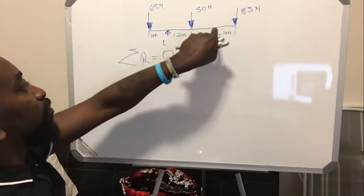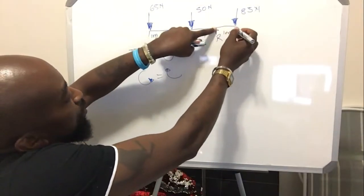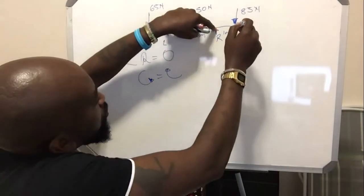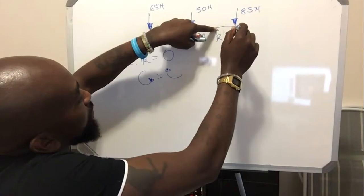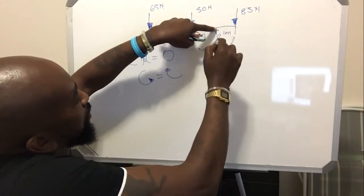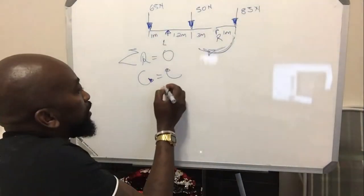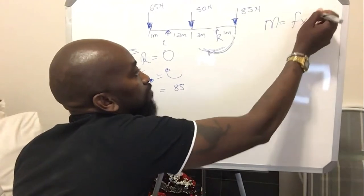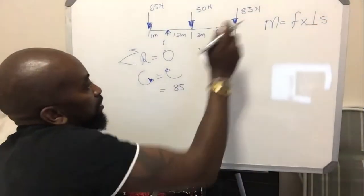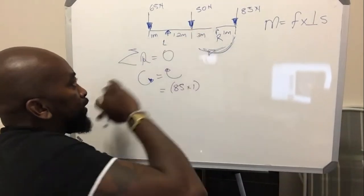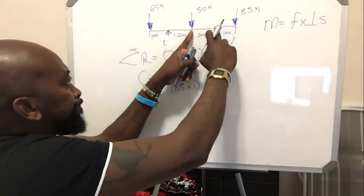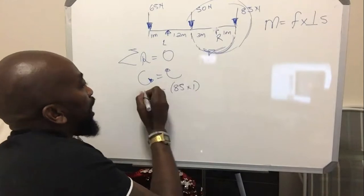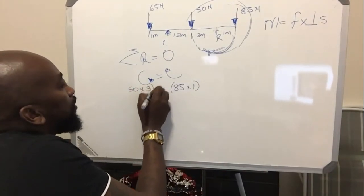When you look at 85, it is 1 meter away and going downwards. To determine clockwise or anti-clockwise, protrude it and think of it as a cable — tie it to the 85, and think of which way this force is influencing. This way is the way a clock works, so it's on the clockwise side. Moment is force times perpendicular distance, so the force is 85 multiplied by 1. On this side, the 50 is 3 meters away and has an anti-clockwise effect towards R, so we put it as 50 times 3 meters.